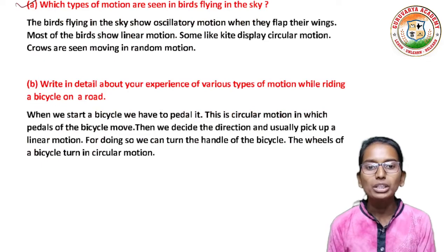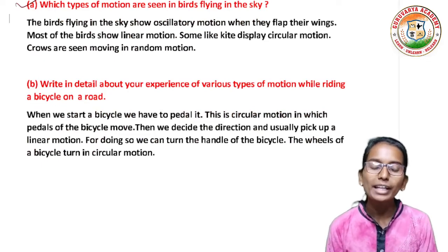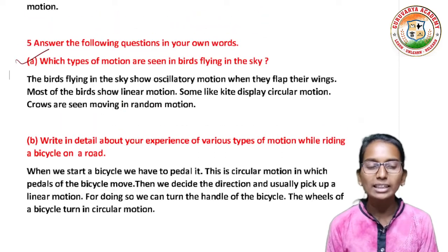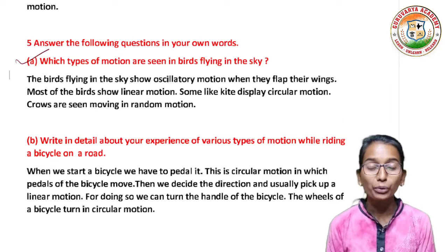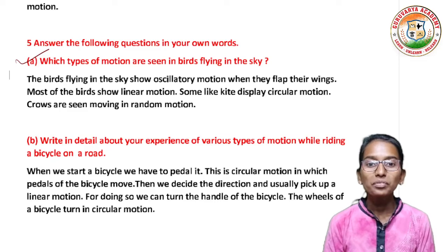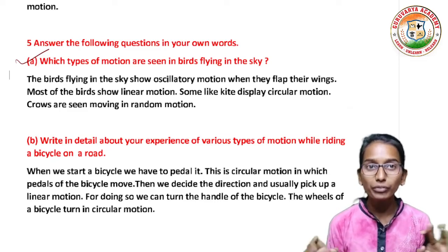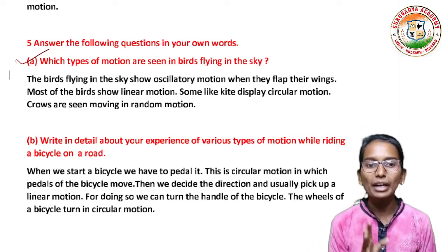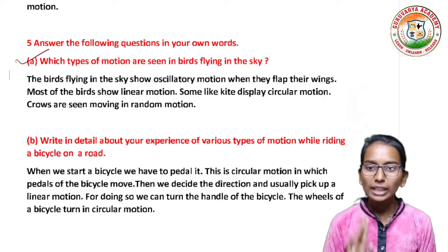Which types of motion are seen in birds flying in the sky? The birds flying in the sky show oscillatory motion when they flap their wings. Most birds show linear motion. Some, like the kite, display circular motion. Crows are seen moving in random motion.